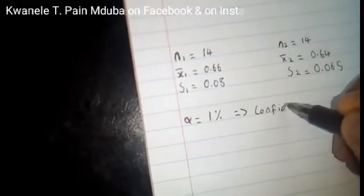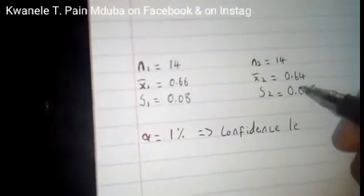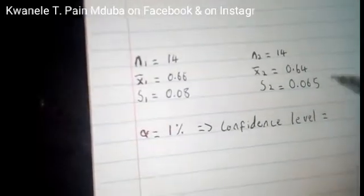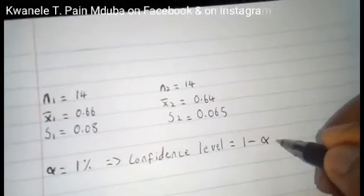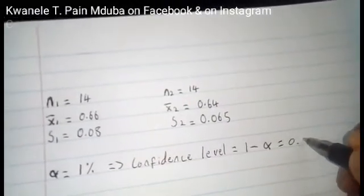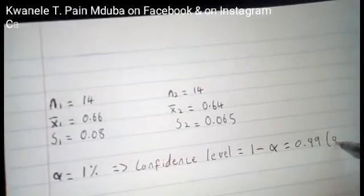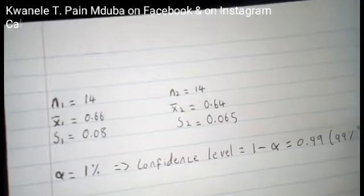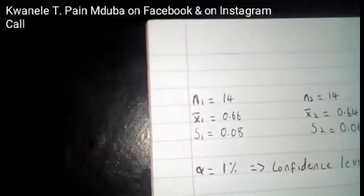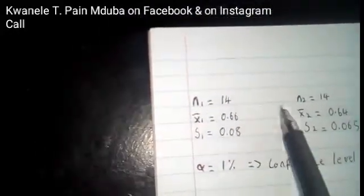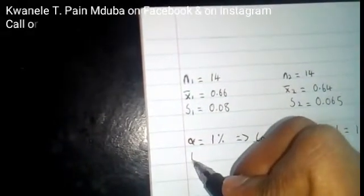The confidence level is equal to 1 minus alpha, which is 0.99. Since our sample sizes are less than 30, therefore we use the T-distribution.